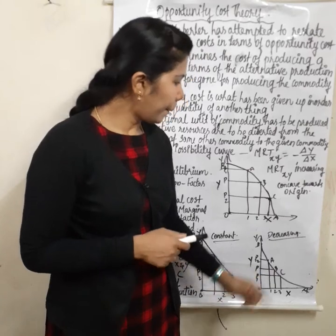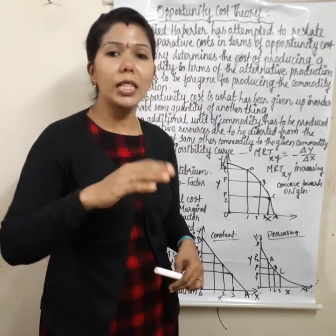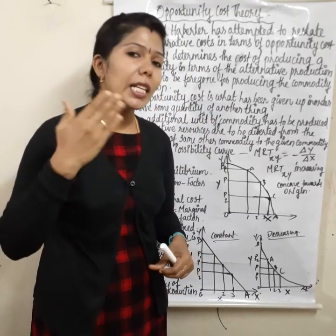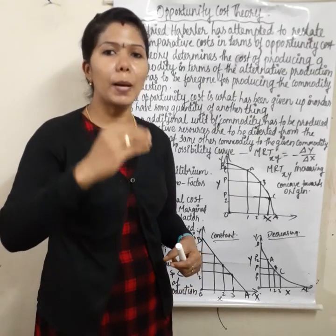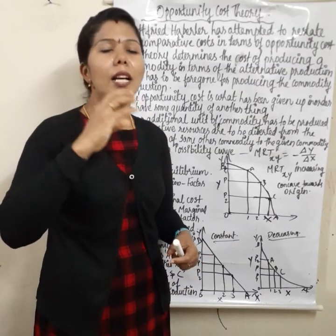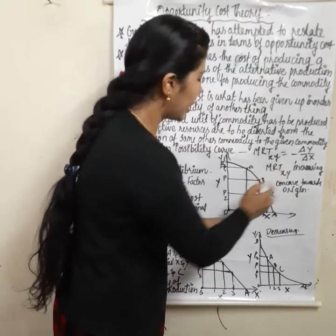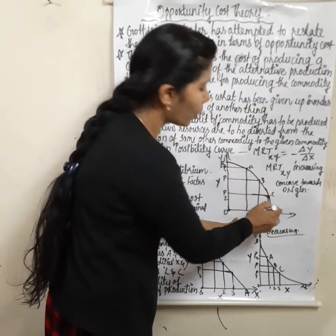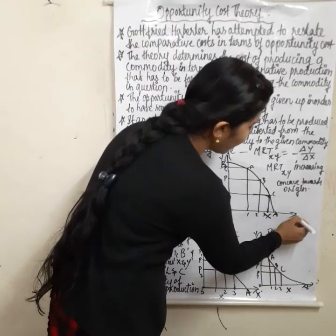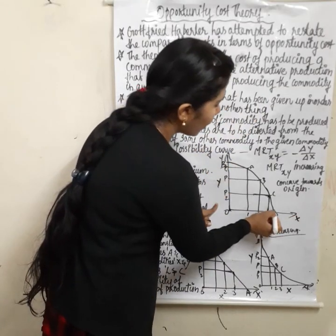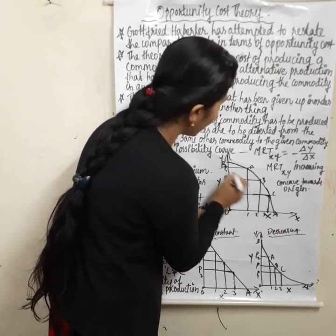MRT XY is increasing. When any one commodity is substituted for the lower factor, MRT XY increases, meaning the curve is concave towards the origin. On the diagram, with X on the X-axis and Y on the Y-axis, these production possibilities show country A and country B. At point P1, a certain amount of Y commodity and X commodity is produced.